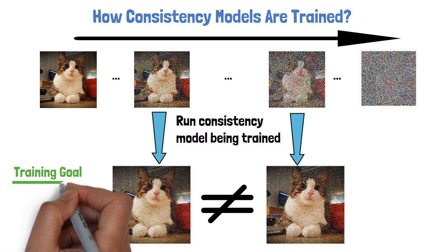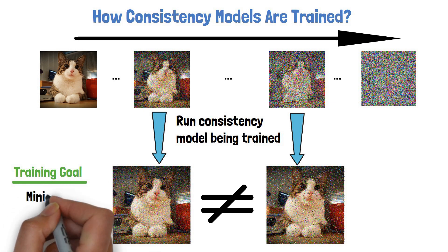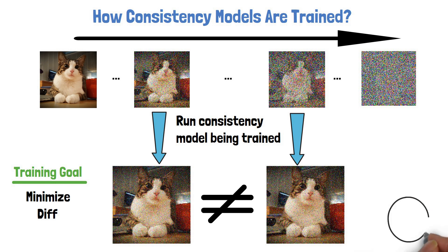The training process goal is to minimize the difference so when the model is applied on points in the same destruction path, they will produce the same clear cat image. The training process will stop once this metric is accurate to a satisfactory level.